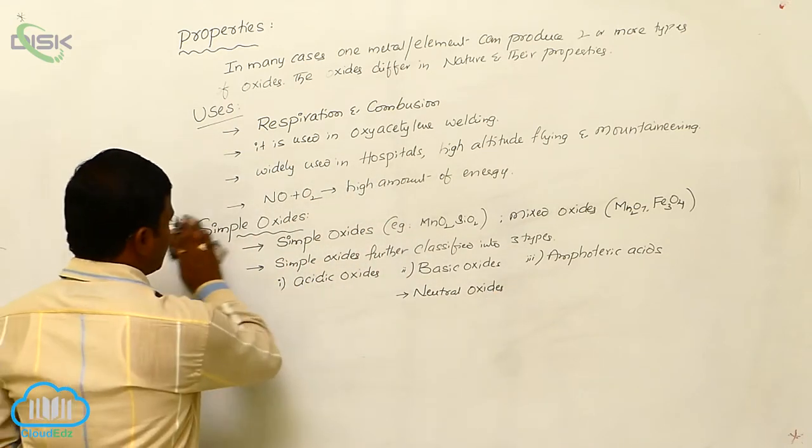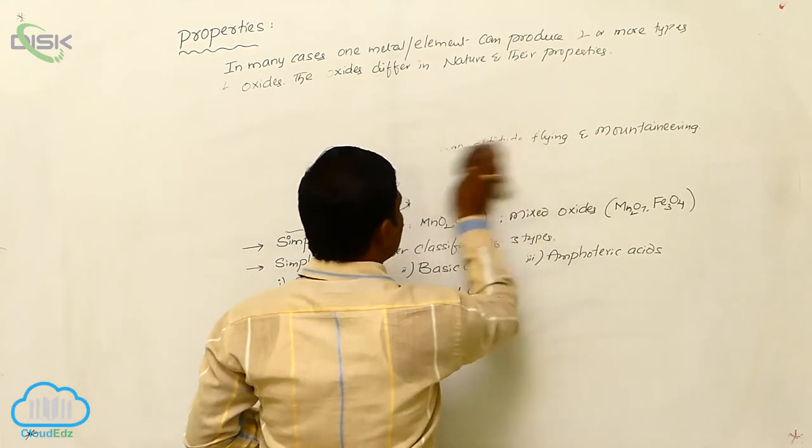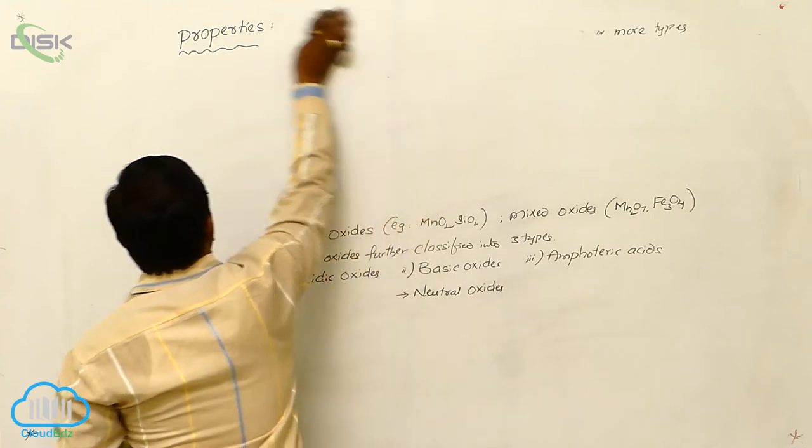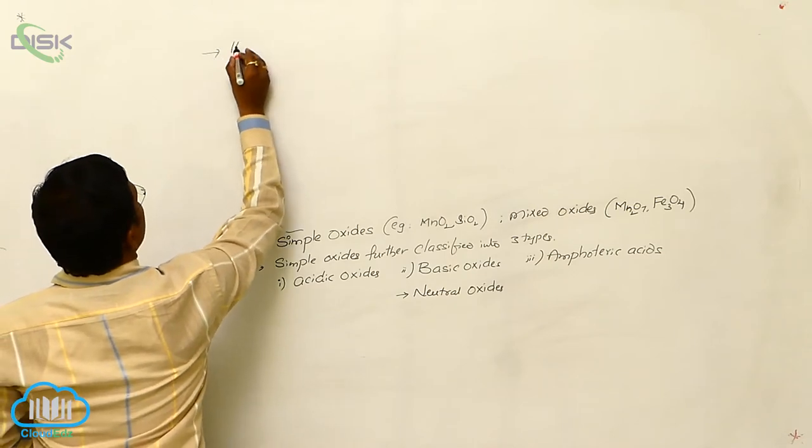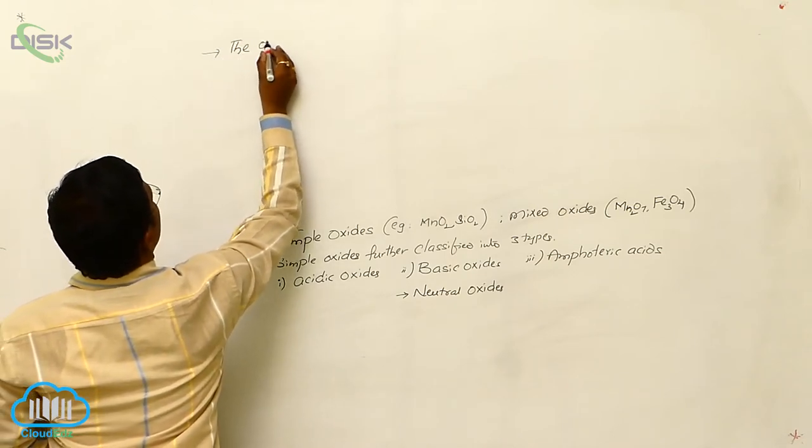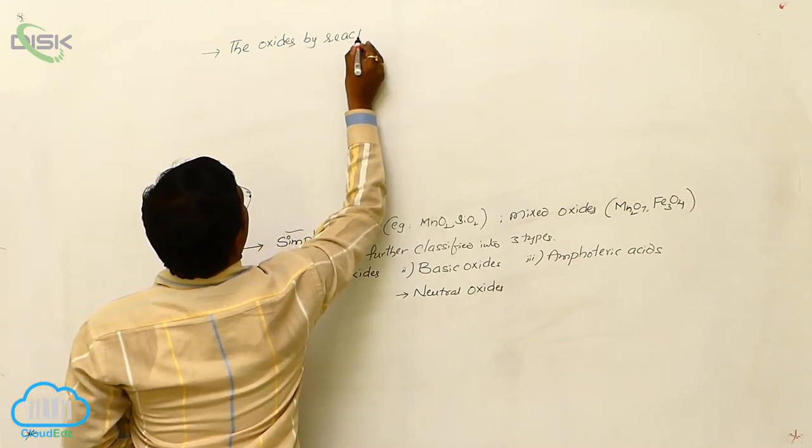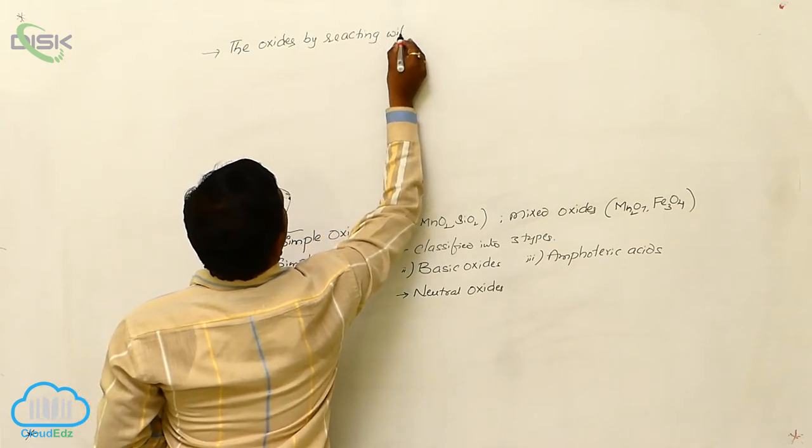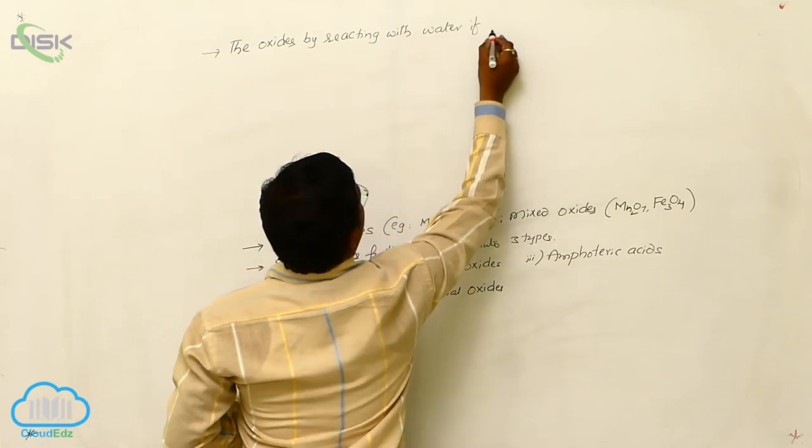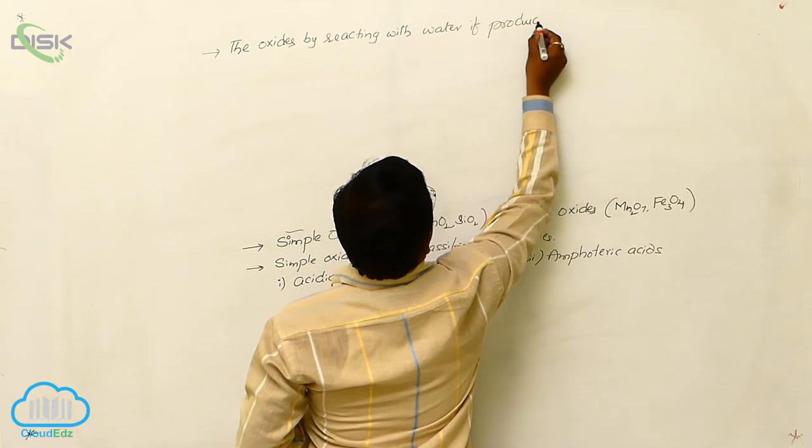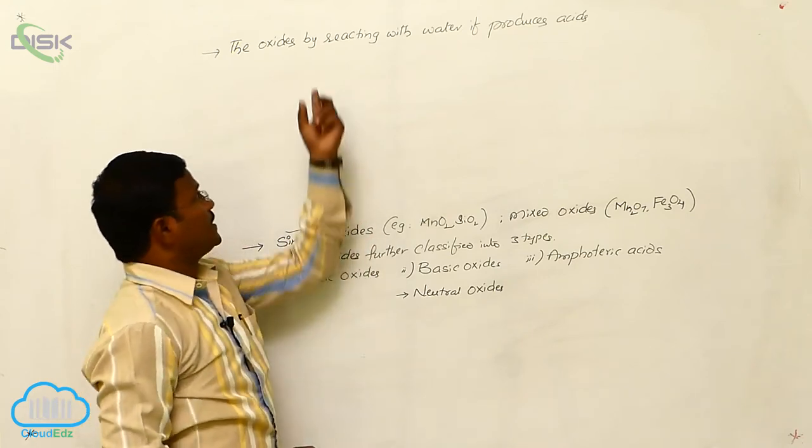Let us learn, what are acidic oxides? Which type of oxides will be considered as acidic oxides? That means, definition for acidic oxides followed by examples for acidic oxides. The oxides, by reacting with water, if produces acids.